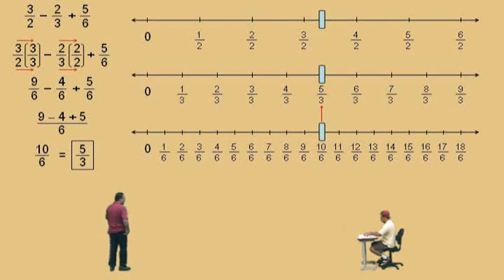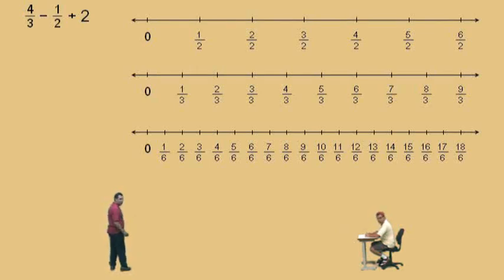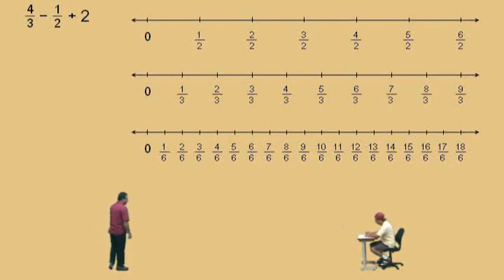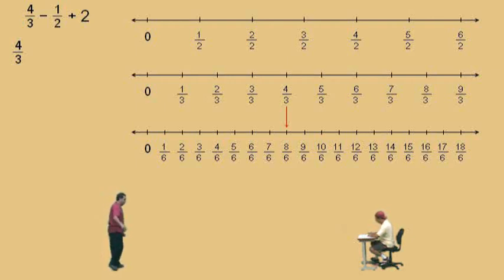Okay, that was fun. Let's do another one. Now, here we have 4 thirds subtract 1 half plus 2. Now, don't get scared — just use the force. Here we go, Charlie. What is our lowest common denominator? It's 6. We'll talk about finding the lowest common denominator in more detail in the next video.